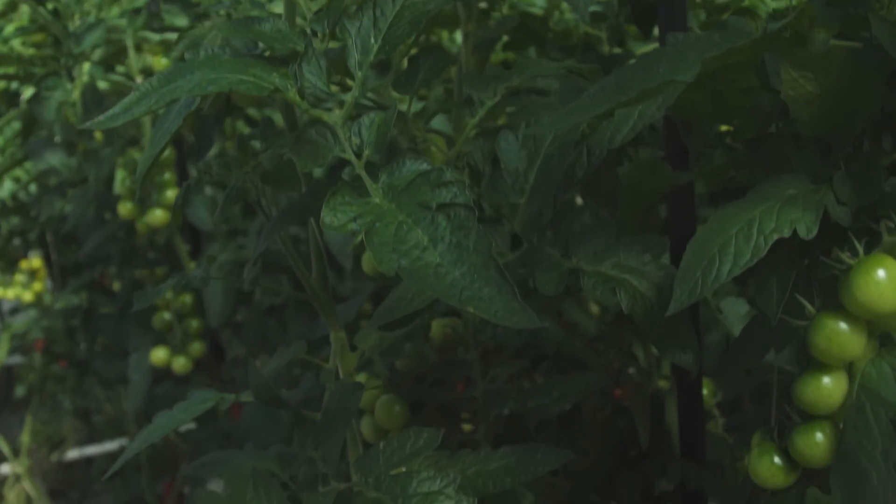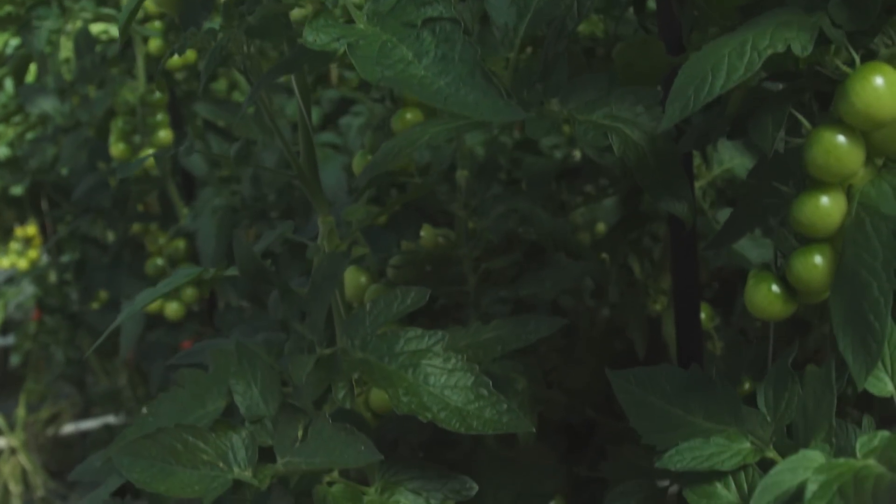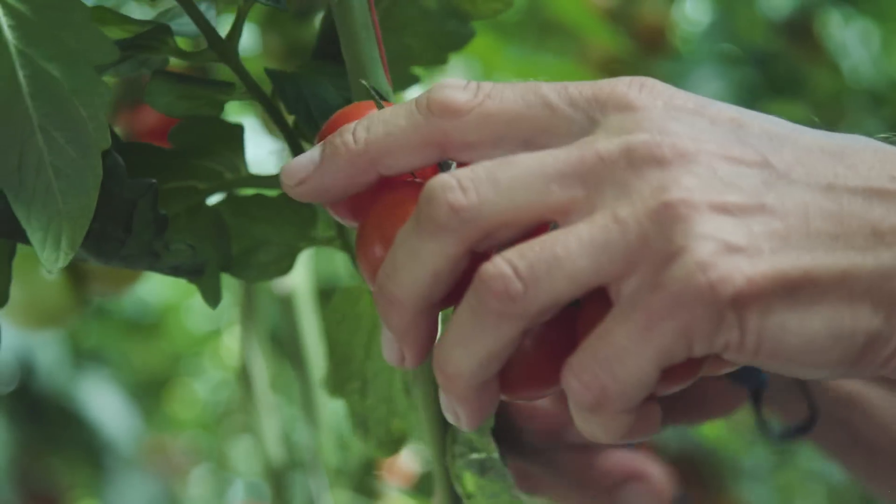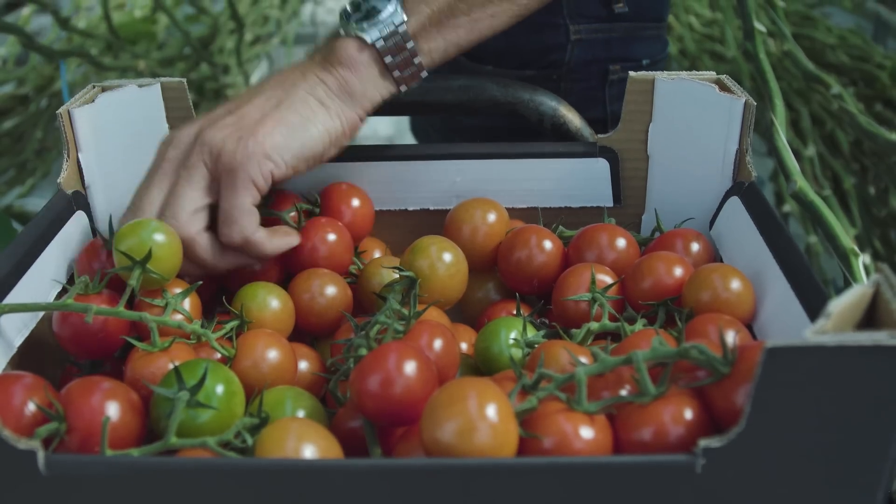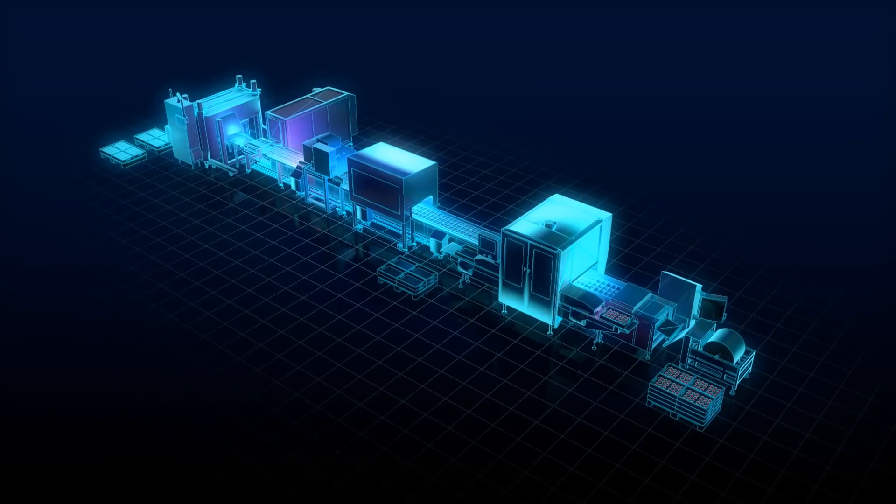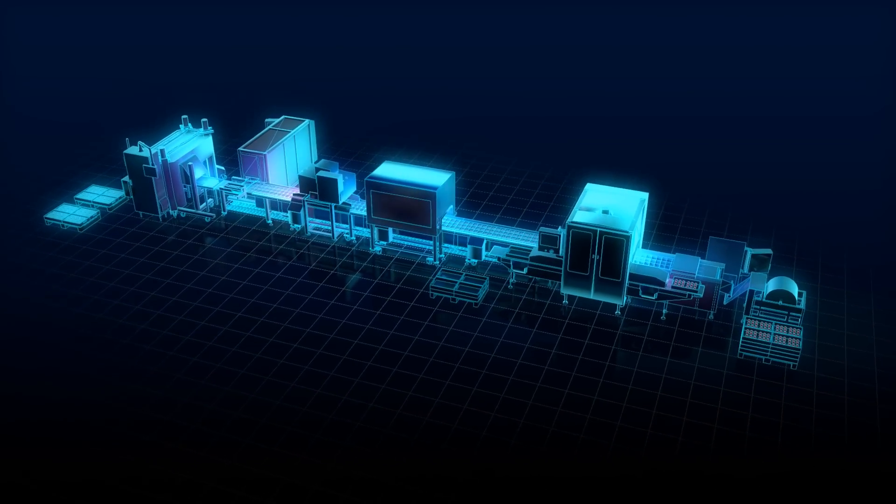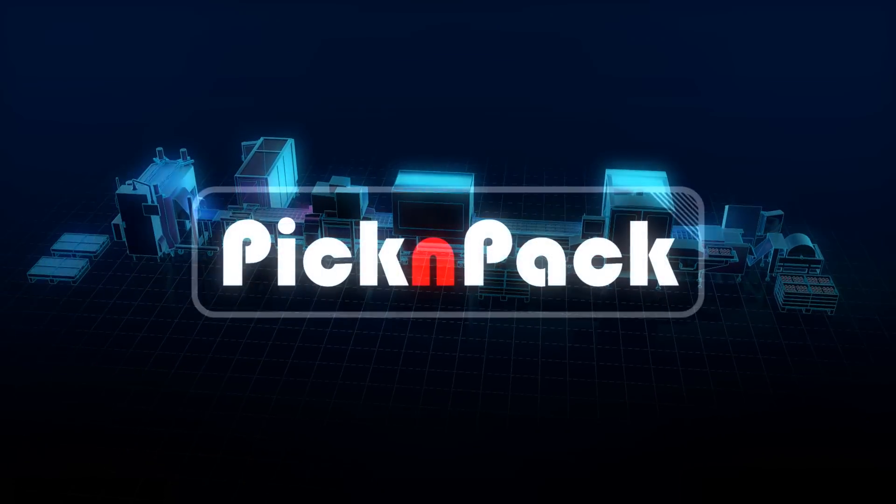At the end of 2011, 14 partners came up with a master plan that would revolutionize picking and packing operations in the food industry. A plan that would make it possible for different food products to be processed on the same production line. This master plan was given a name: Pick and Pack.